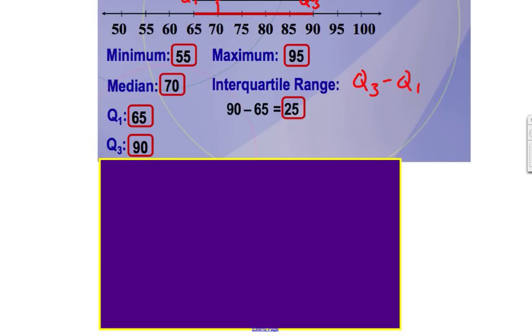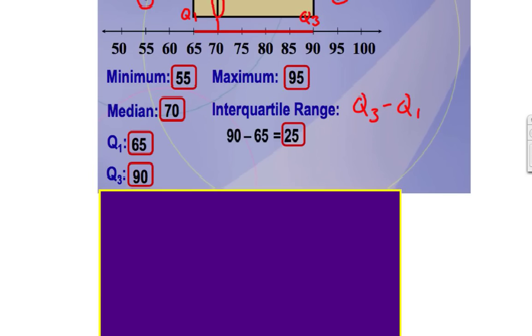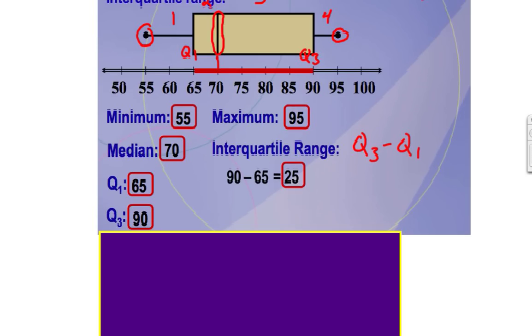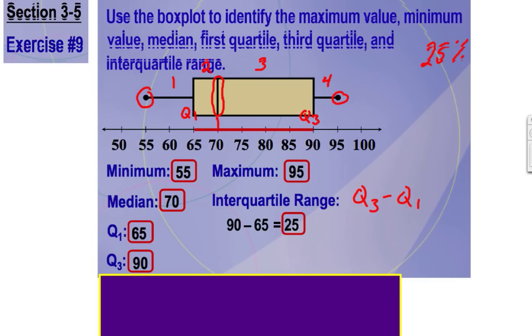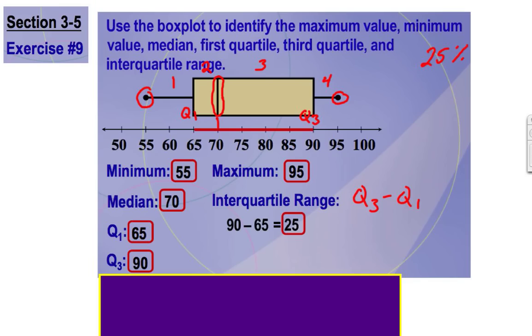And when we subtract those, we find out that our Q1 is 65, our Q3 is 90. So therefore, our interquartile range is 90 minus 65, which is 25.